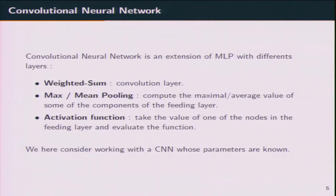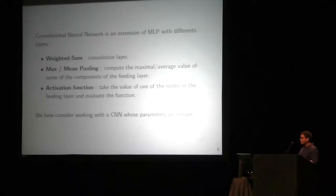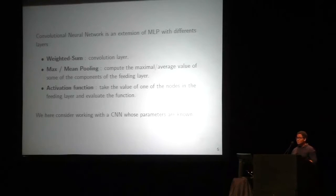A convolutional network is just an extension of a multi-layer perceptron with additional layers. In a convolutional network you can find a convolutional layer with a weighted sum, then a max or average pooling layer which computes maximum or average values of components of the preceding layers, and also activation functions like in a multi-layer perceptron. We place ourselves in the case where a convolutional network is already trained and its parameters are fixed.